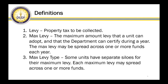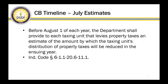So circuit breaker is a constant topic the department presents on — it's really so we understand that while the budget order contains a certified levy, circuit breaker is one of the reasons why a unit may not collect that full amount. Any reference to levy means property tax to be collected. The maximum levy is the maximum the unit can adopt and that the department can certify in any given year — enforced in aggregate regardless of how many funds you're spreading your levy across.